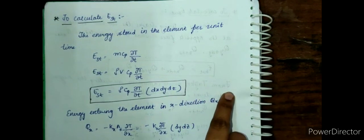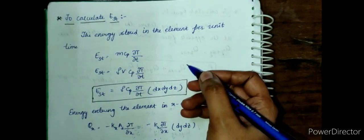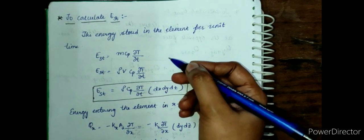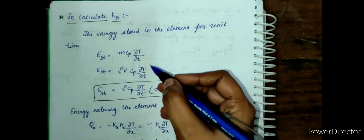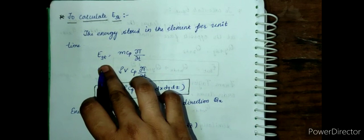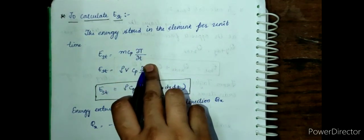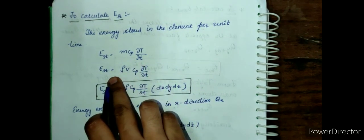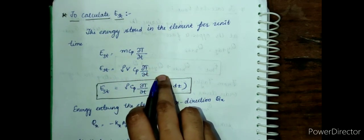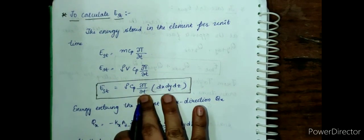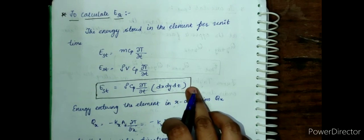Next, we calculate energy stored in the element per unit time. Energy is flowing in from all three directions and energy is generated within the control volume, causing the internal energy and temperature to increase. The rate of increase of internal energy is given by m·cp·(∂T/∂t). Here, mass m = density × volume = ρ·(dx·dy·dz), so the stored energy term becomes ρ·cp·(∂T/∂t)·dx·dy·dz.